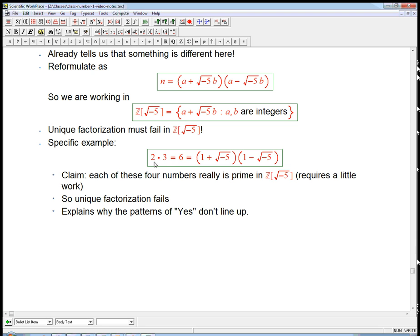So here we've got something where 2 times 3 and 1 plus or minus root minus 5 are both multiplying to be the same thing. So that's exactly the kind of case that we were talking about before, that breaks this wonderful lemma.